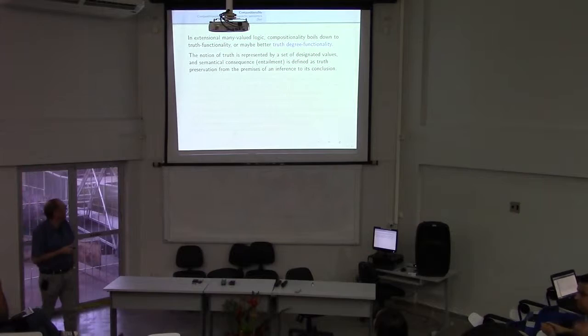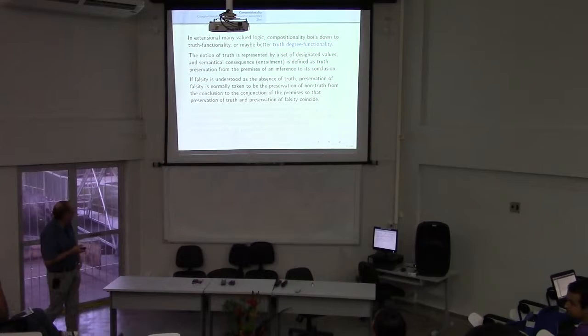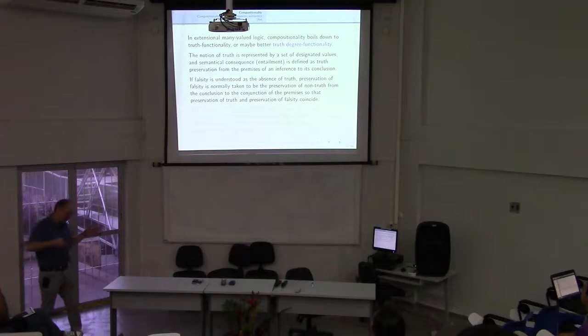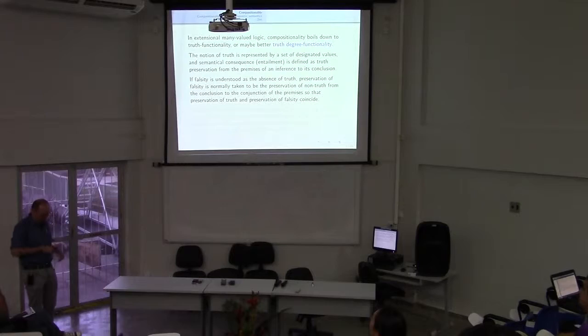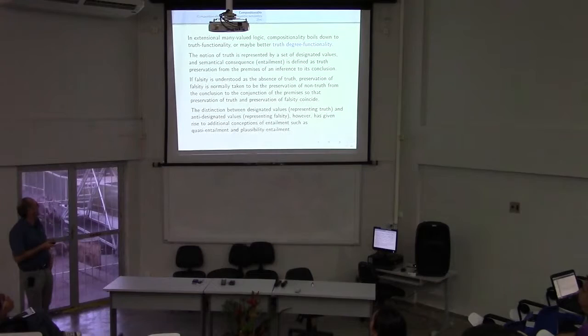If we understand falsity as the absence of truth, then preservation of falsity is the preservation of non-truth from the conclusion to the premises, so preservation of truth and preservation of falsity just coincide. But if we draw a distinction between truth and falsity — if falsity is not the complement of the set of true statements — then the distinction between designated values representing truth and anti-designated values representing falsity gives rise to additional concepts of entailment such as quasi-entailment and plausibility entailment, which we have seen at various places during this conference.